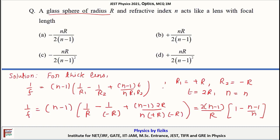This turns out to be f would be nR/(2n-1). From there, if we can check it out, we would get nR/2(n-1). Our answer would be option B for this problem.